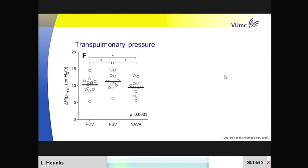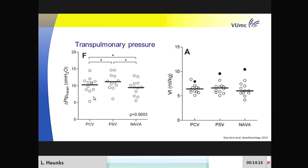Tidal volume may not be the most important variable—it's the transpulmonary pressure that's probably most important. All patients were equipped with esophageal balloons, so we could measure transpulmonary pressures. Although there was a statistically significant difference in favor of NAVA, from a clinical perspective there is not really a meaningful difference. But one specific patient with a very low pH—and therefore a very high respiratory drive—may be a problem.